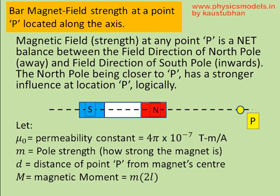Now, we define some terms. μ₀ is the permeability constant, m is the pole strength—the most important. Stronger the magnet, higher the pole strength, higher the magnetic field. So, magnetic field B should finally be proportional to m. We have talked about d, and capital M is the magnetic moment which is m into 2l.